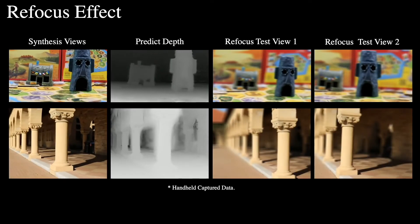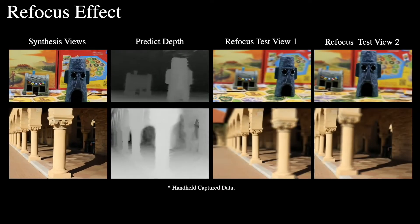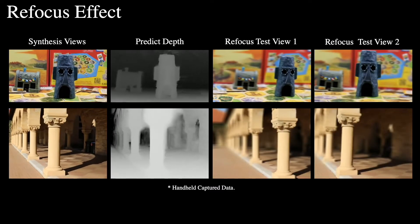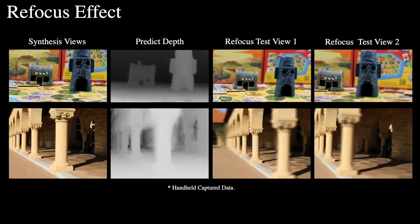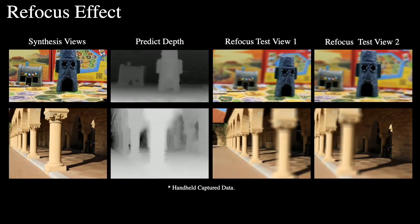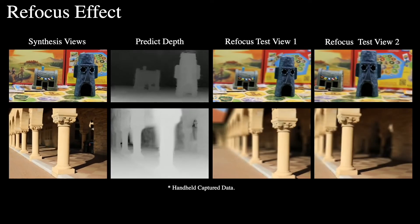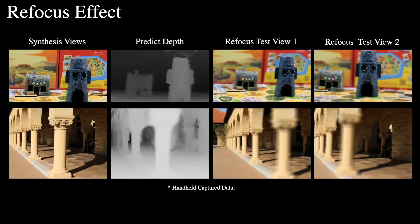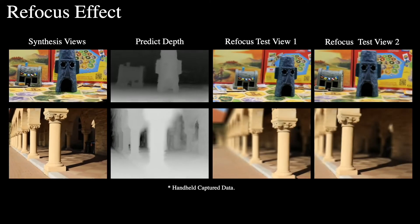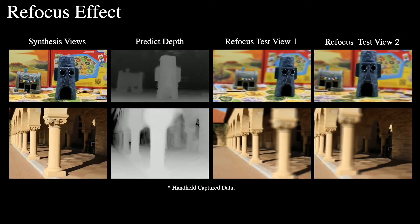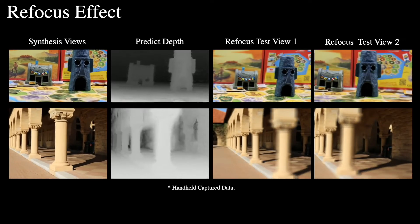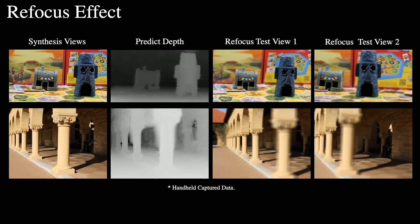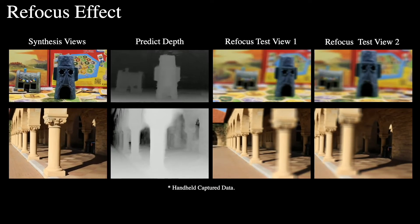We show an example of the depth estimation and refocusing effect on our own captured scene. Note the detailed depth of the house and statue are successfully recovered. With free viewpoint scene depth, we can automatically select a focal plane given an image pixel location. We show two refocused novel views rendered from our own captured scene.